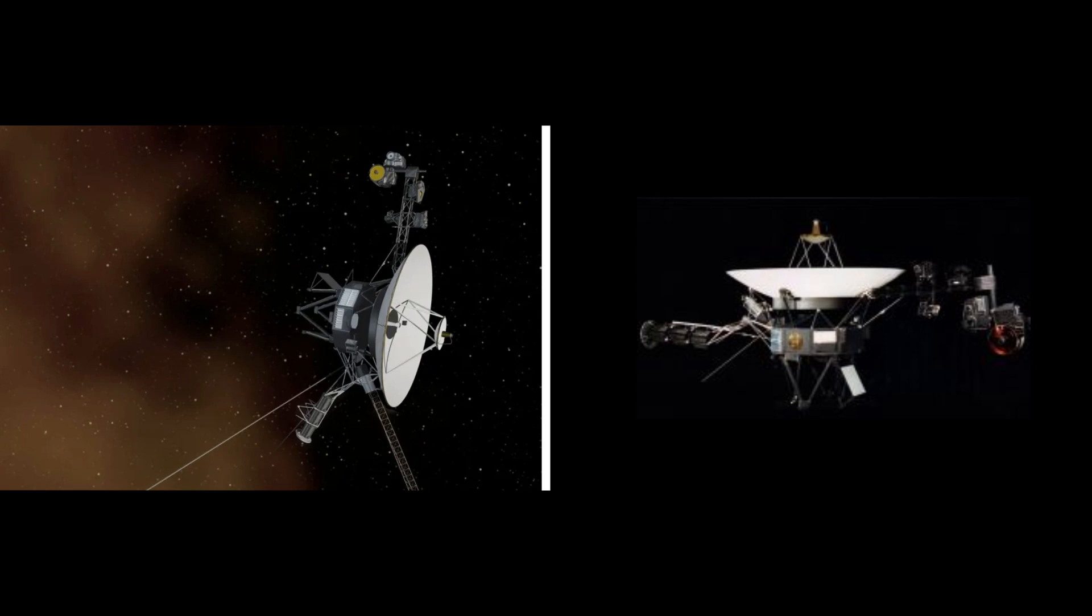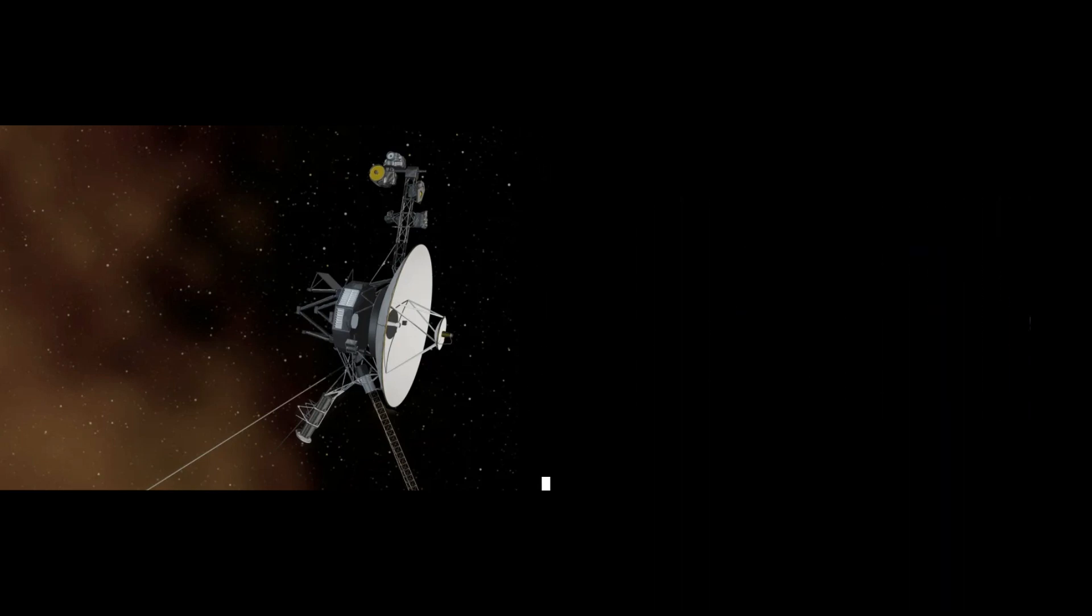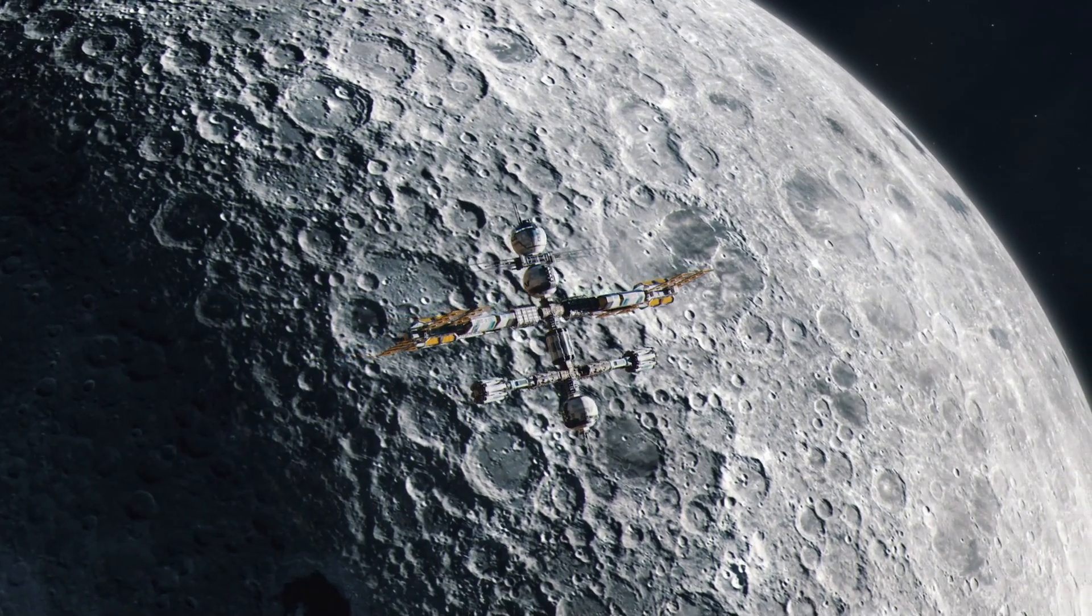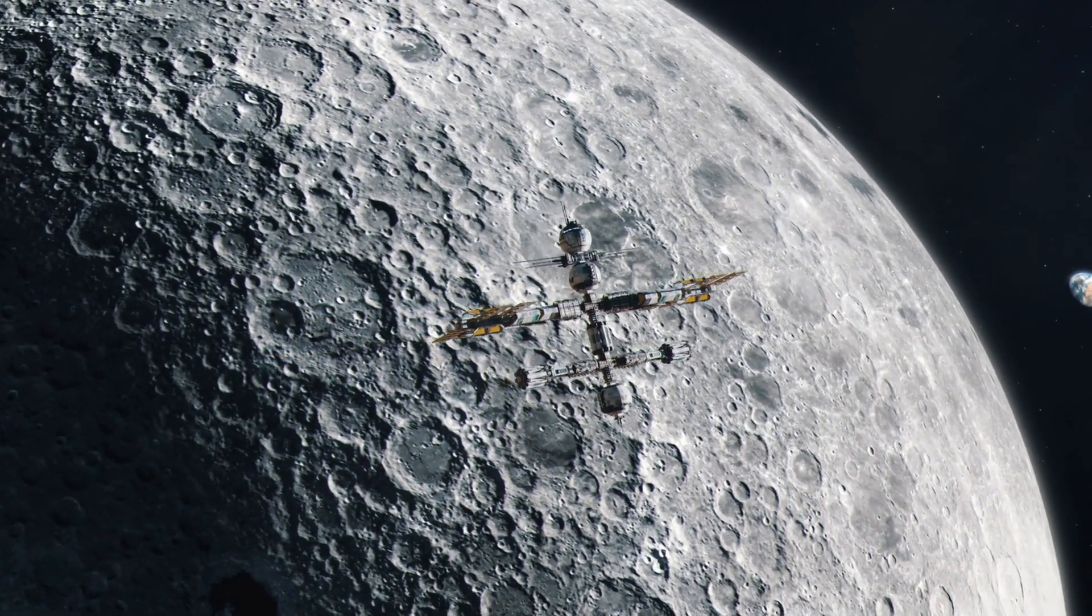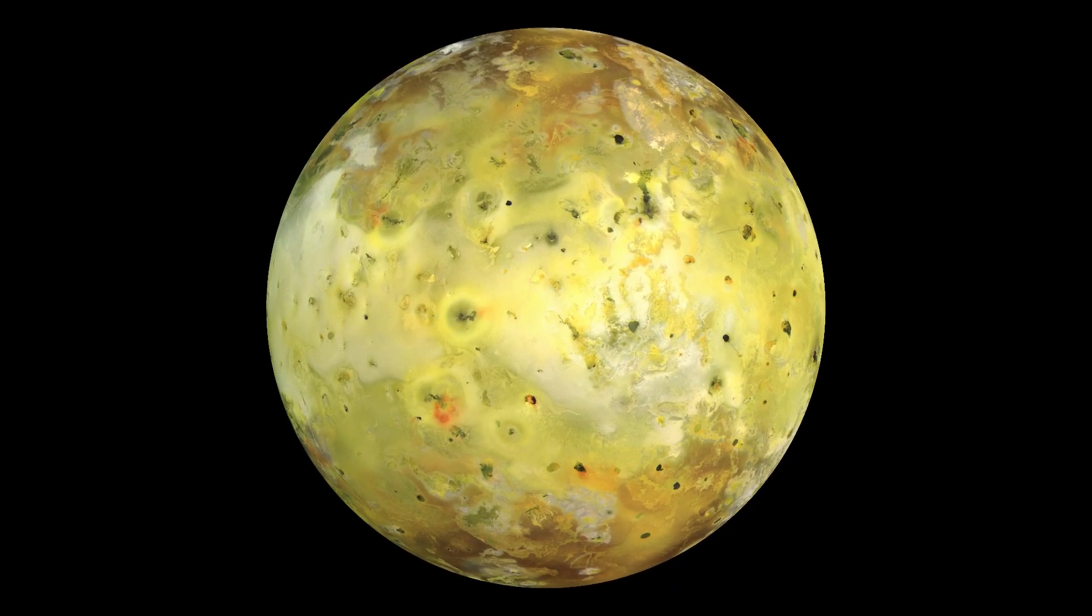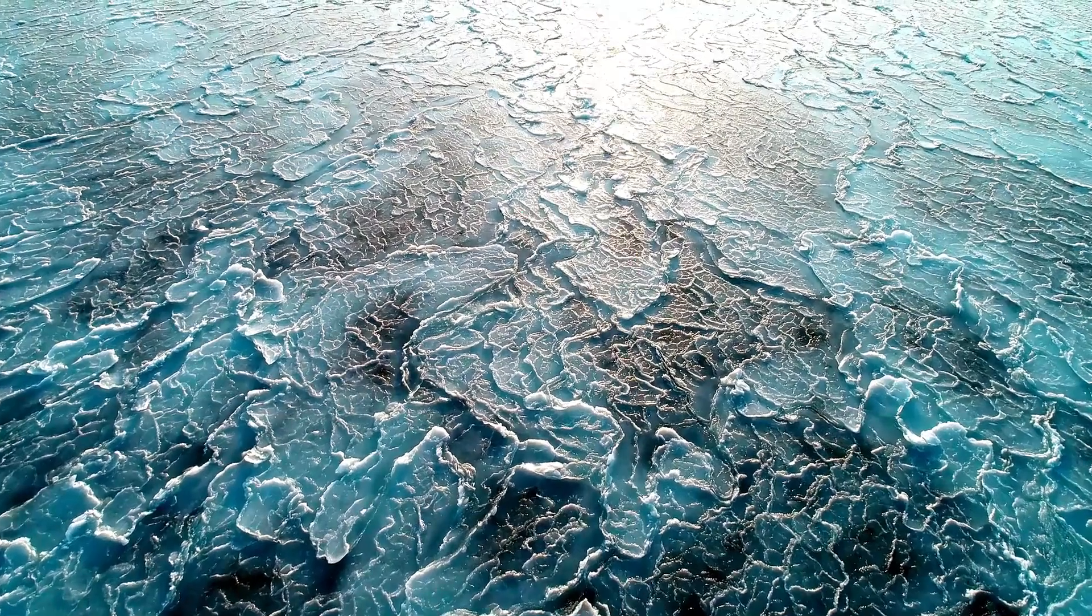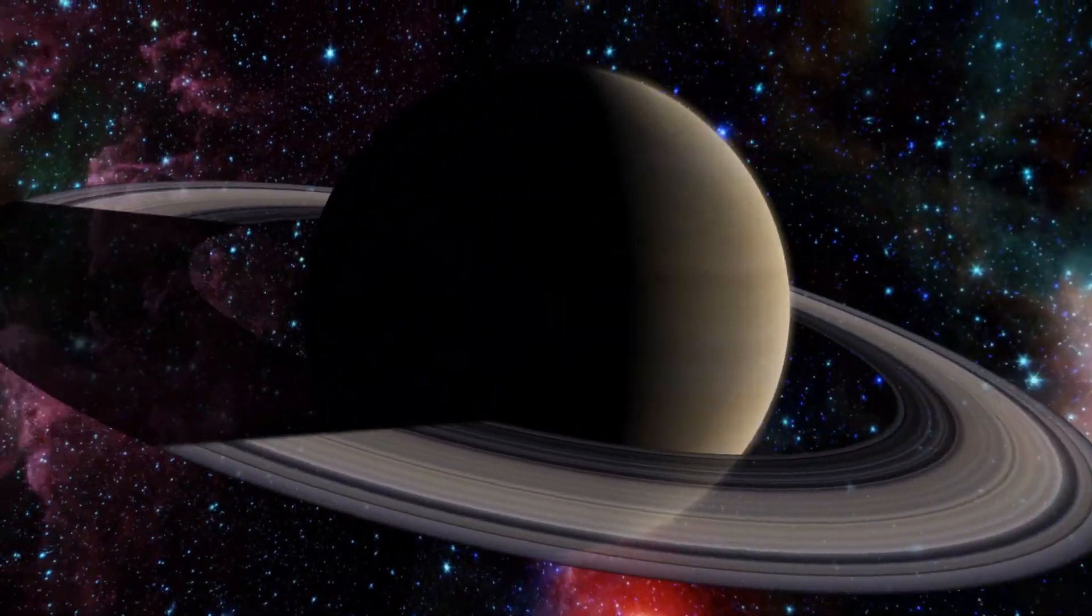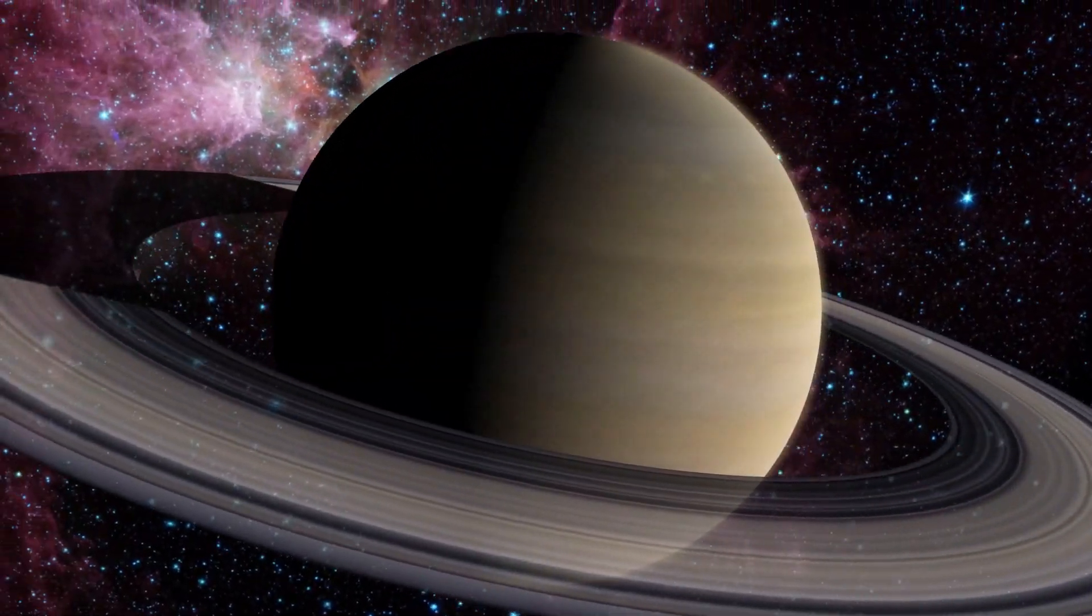If Voyager 1 and 2 had failed or never set out on their epic trips, our maps of the outer planets and their moons would not have the amazing level of detail we have now. We might not have seen the volcanoes on Io or the icy surface of Europa.